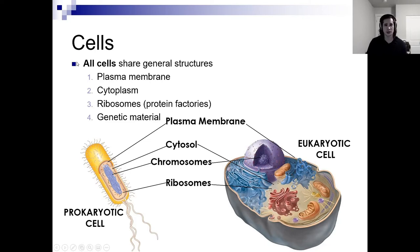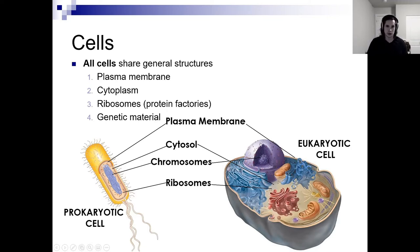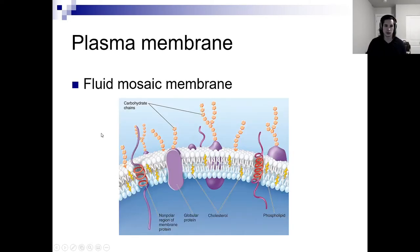All cells have general structures. The commonality between prokaryotes and eukaryotes is they all have plasma membranes, cytoplasms, ribosomes — which create proteins — and genetic material. Only eukaryotes have a nucleus; prokaryotes do not. That's definitely going to be on the first test.